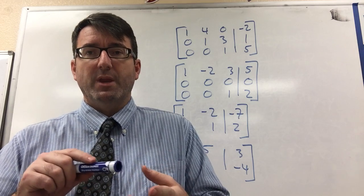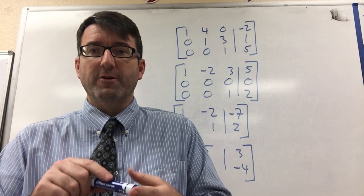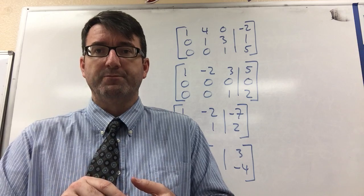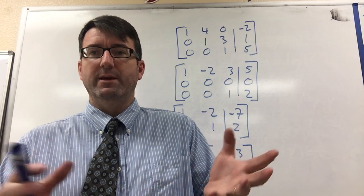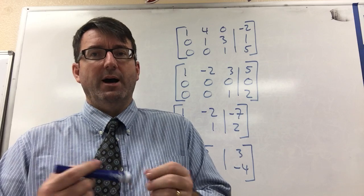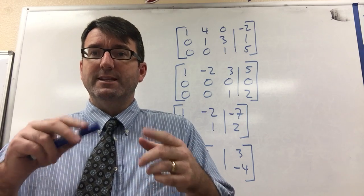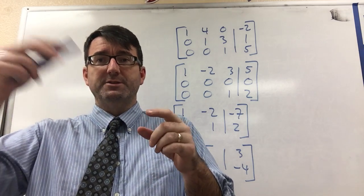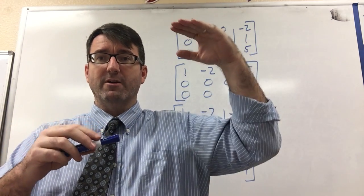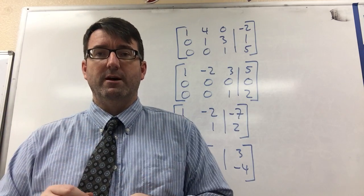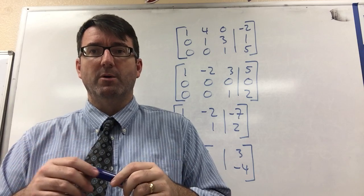One is the first non-zero term in any row has to be a one. It's called the leading one. And second, the leading one, for any two successive rows, the leading one has to be farther to the left on the higher row than on the lower row.